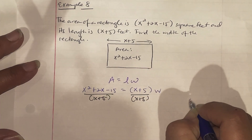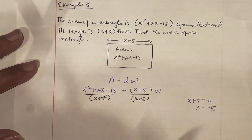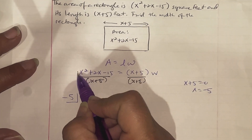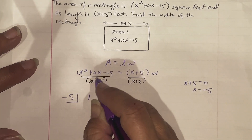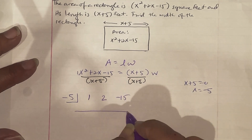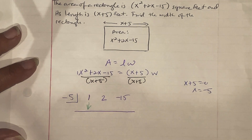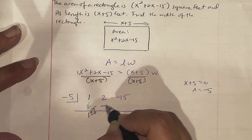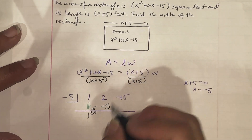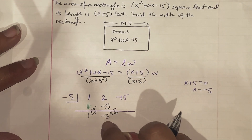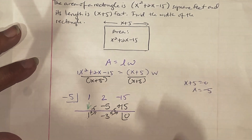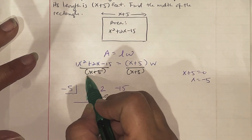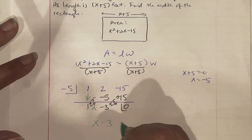Set x plus 5 equal to zero, so x equals negative 5. Put negative 5 on the outside. The coefficients of x squared plus 2x minus 15 are 1, 2, and negative 15. Bring the 1 down. Multiply: 1 times negative 5 is negative 5. Add: 2 minus 5 is negative 3. Multiply: negative 3 times negative 5 is positive 15. Add: negative 15 plus 15 is 0 — zero remainder. Starting with a power of 2, the answer is x minus 3, which is the width of the rectangle.